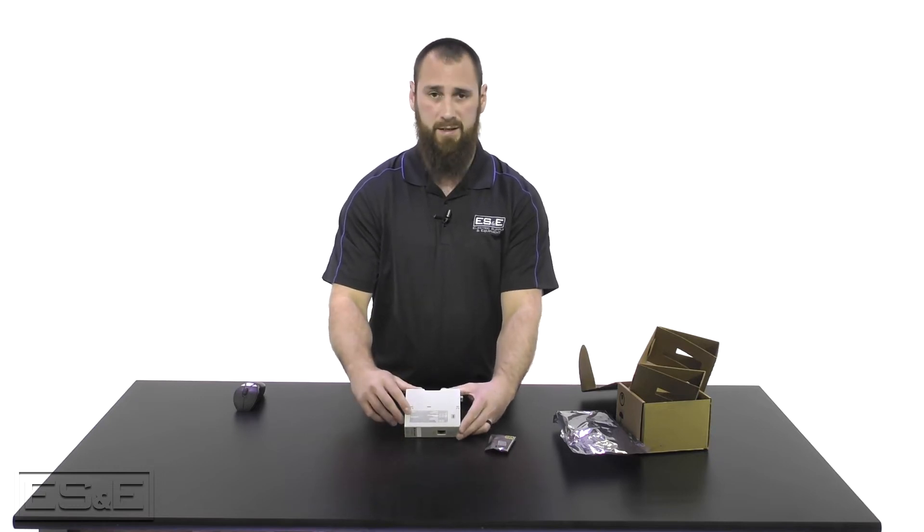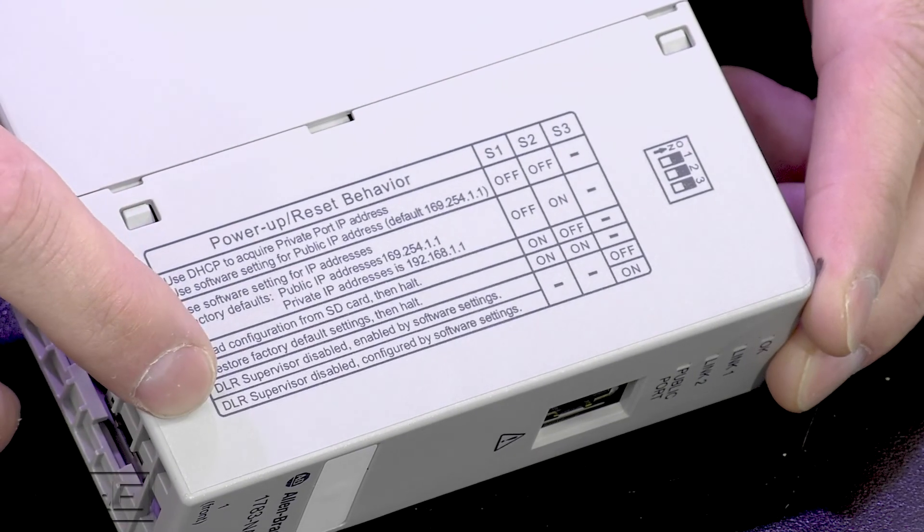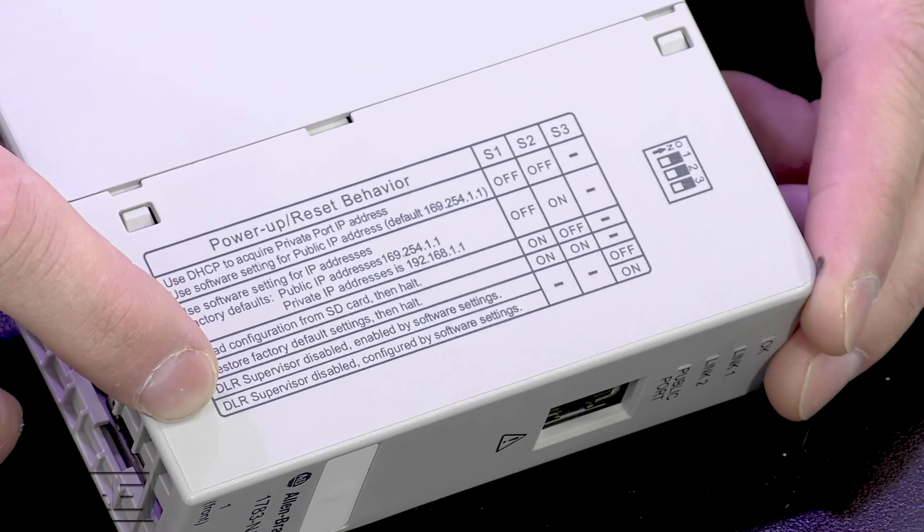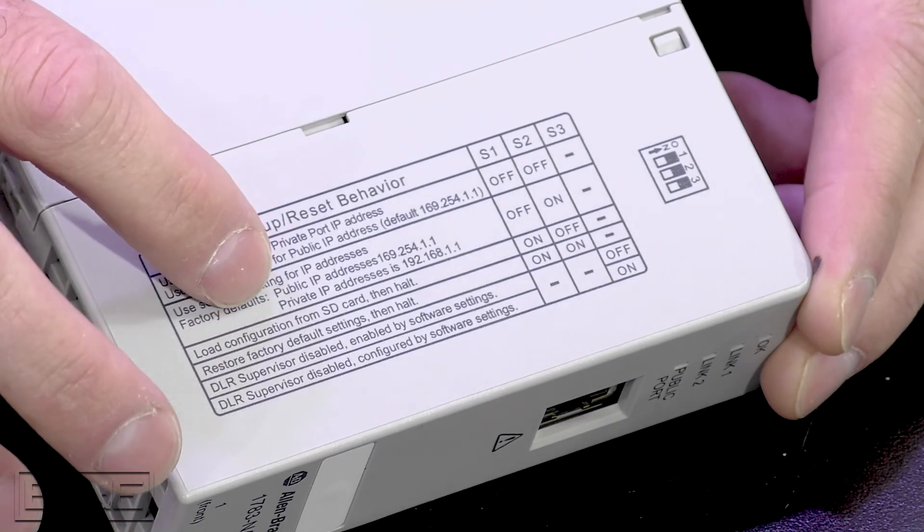On the side of the NAT-R module there is a chart that will explain all the different configuration possibilities for the NAT-R module.